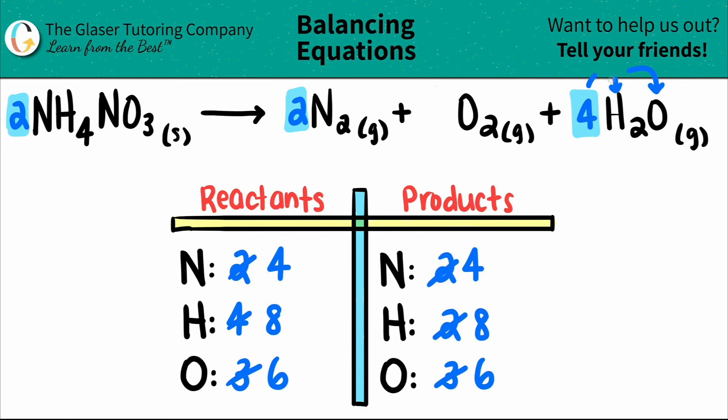So in this case, our balanced equation is 2NH4NO3(s), which will yield 2N2(s) plus one O2 plus 4H2O(s).